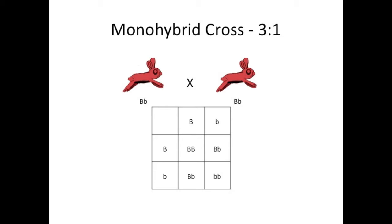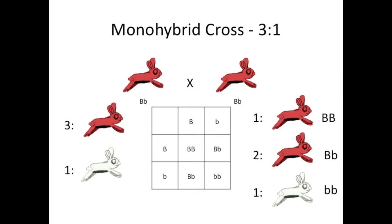The monohybrid cross produces a 3 to 1 ratio of red to white. All of these ratios that I have as slide headings, by the way, refer to phenotype ratios, not genotype. But just for this one, here's how the genotypes break down, just to illustrate the difference between genotype and phenotype. But for this video and genetics in general, we're really only concerned with phenotype.